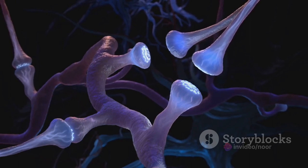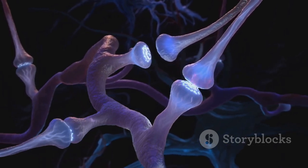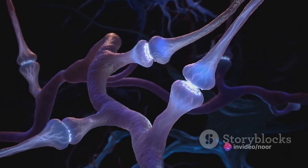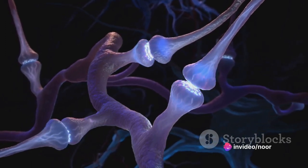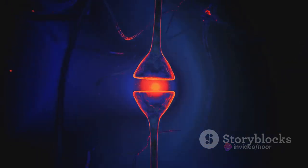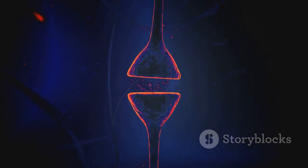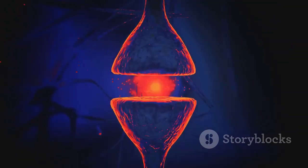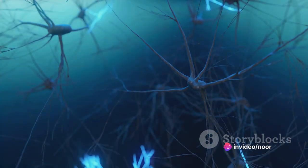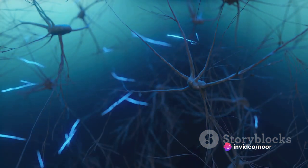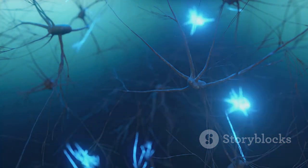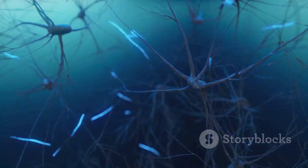Now let's delve into the role of these neurons. They are the fundamental units of the brain, the conductors of our neural symphony. Each neuron is capable of receiving and transmitting signals, akin to a two-way radio station, sending and receiving messages in the form of electrical and chemical signals. When a neuron receives a signal, it generates an electrical pulse known as an action potential. This pulse travels down the neuron's axon, triggering the release of chemicals called neurotransmitters. These neurotransmitters cross a small gap called a synapse, reaching neighboring neurons and passing on the message.